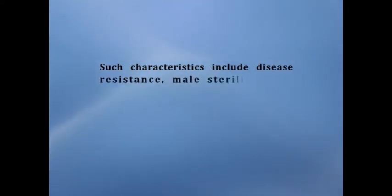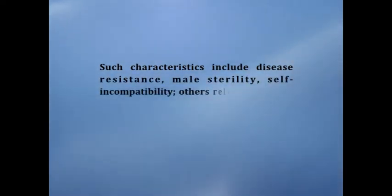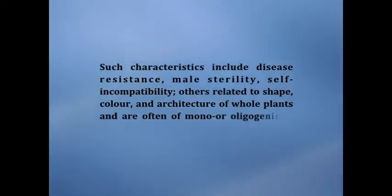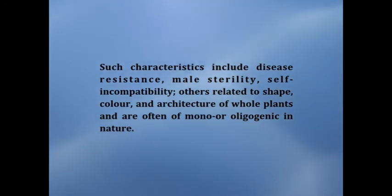Next we will come to the selection for major genes linked to markers. The major genes which are responsible for economically important characteristics are frequent in the plant kingdom. Such characteristics include disease resistance, male sterility, self-incompatibility, and others related to shape, color, and architecture of whole plants, and are often mono- or oligogenic in nature. The marker loci which are tightly linked to the major genes can be used for selection and are sometimes more efficient than direct selection for the target gene.